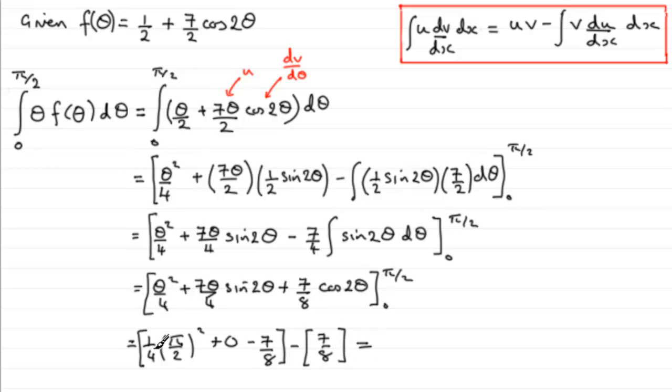Now when we clean this up, we've got a quarter then times pi squared over 4, which is going to give us pi squared over 16. And then here we've got minus 7 eighths minus another 7 eighths, which is minus 14 eighths. Now I could put this all over 16, pull out 1 sixteenth if you like, and then I've just got pi squared minus 28. And there you go, the integral then of theta f of theta with respect to theta.